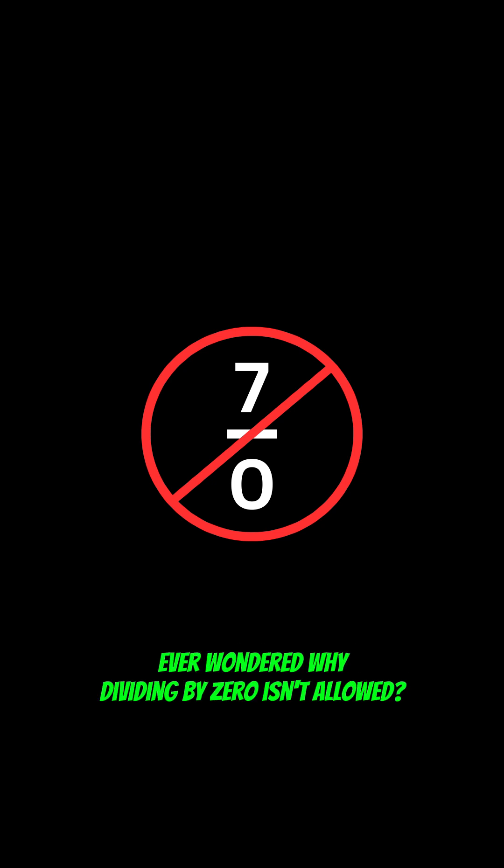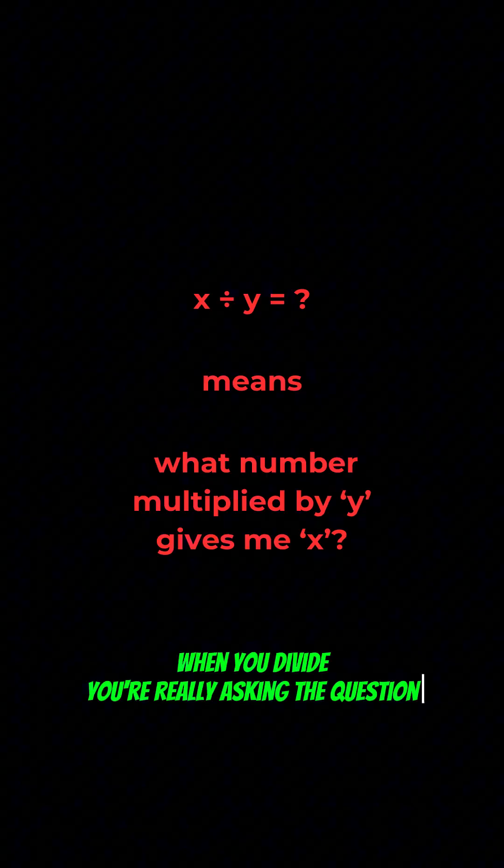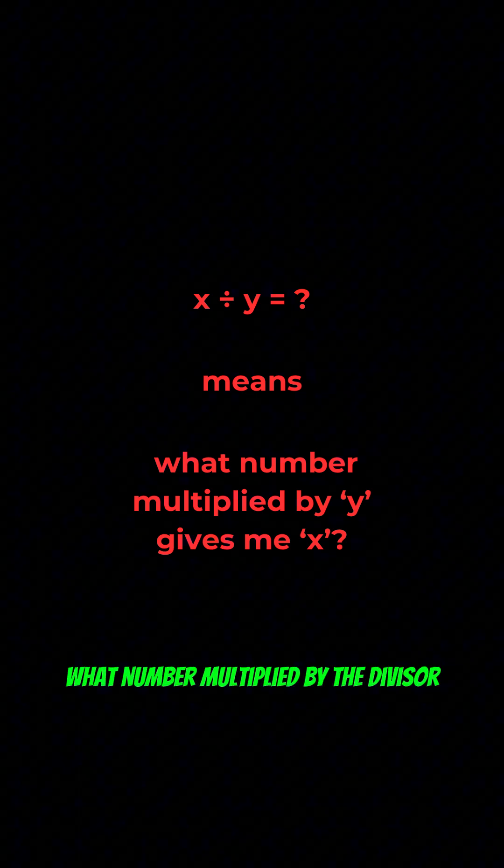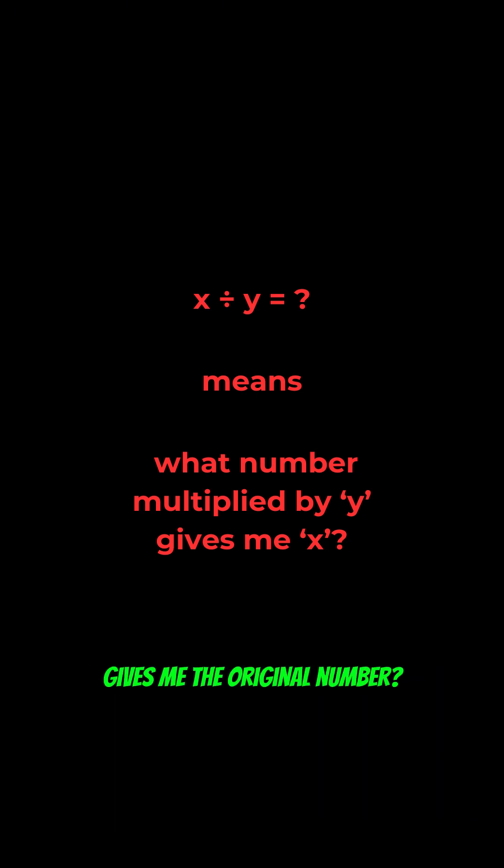Ever wondered why dividing by zero isn't allowed? When you divide, you're really asking the question what number multiplied by the divisor gives me the original number?